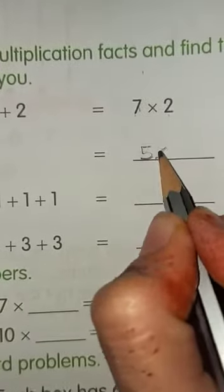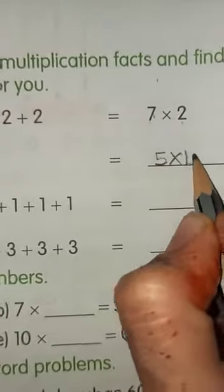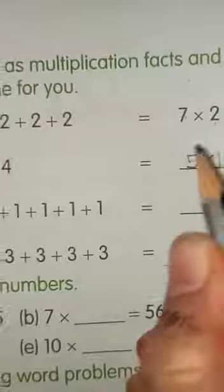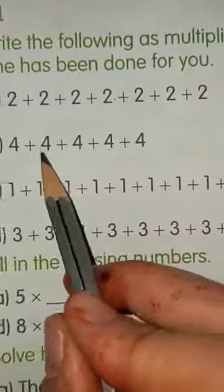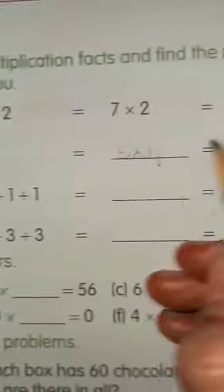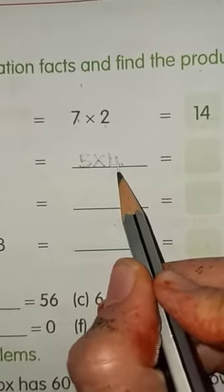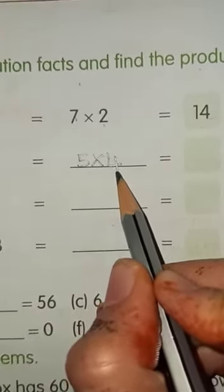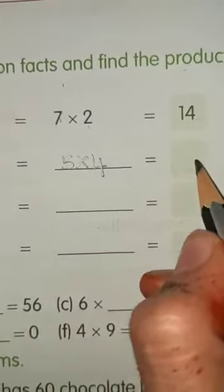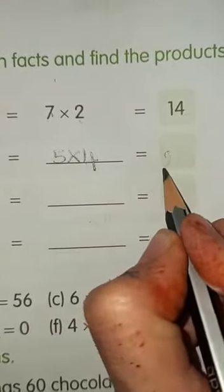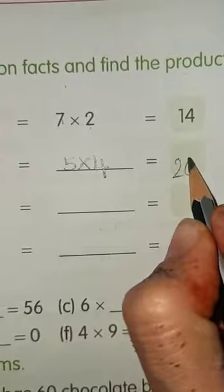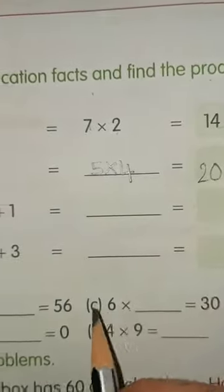5 multiplied by 4. Why we have written 4? Because, here 4 is common. Now, 5 fours are 20. 5 twos are 10, 5 threes are 15, 5 fours are 20. Children, for multiplication, you have to be perfect in the tables.